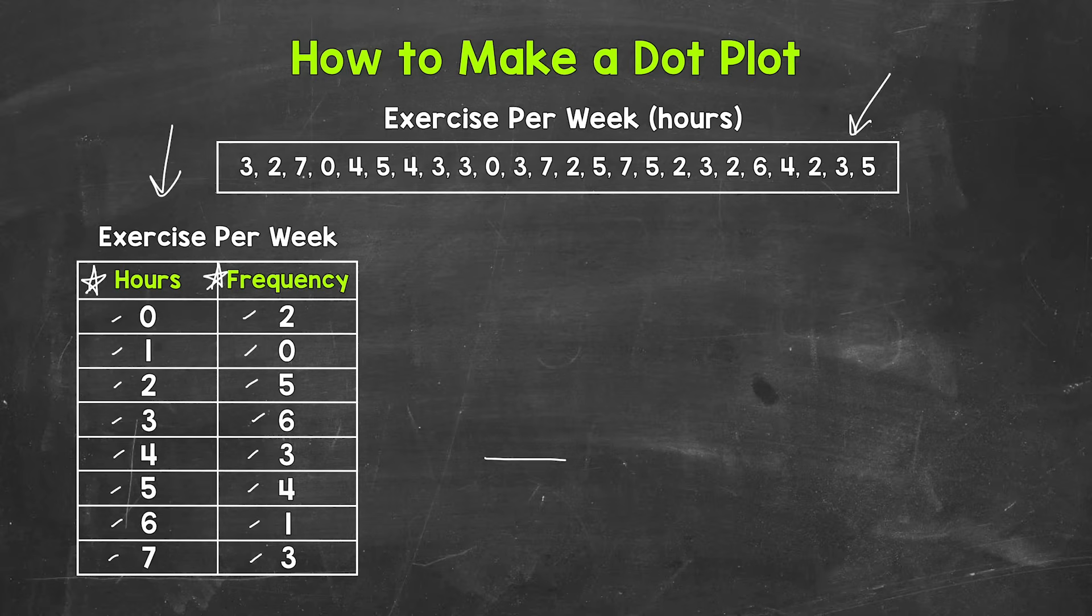And our first step is to draw out a number line. The number line needs to include our lowest number in value all the way up to our highest number in value. We need to make sure to include all of the numbers within the data. Our lowest is zero and our highest is seven for our example. So let's go from zero to seven.